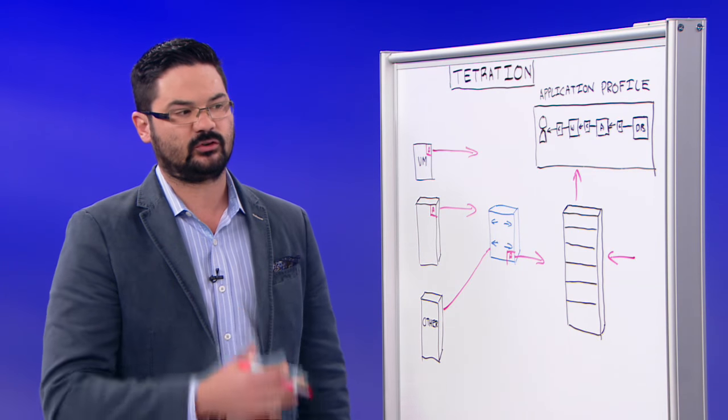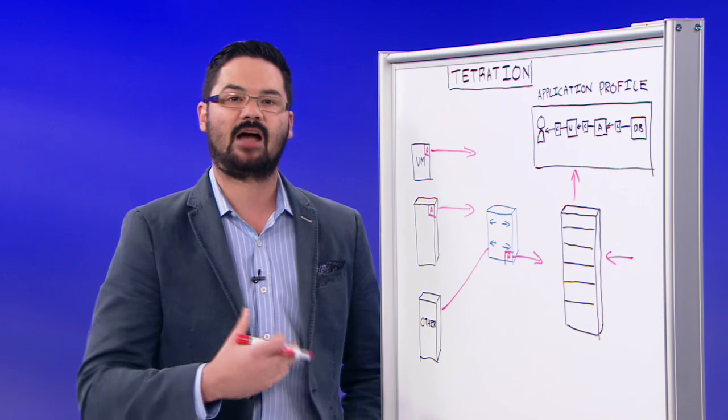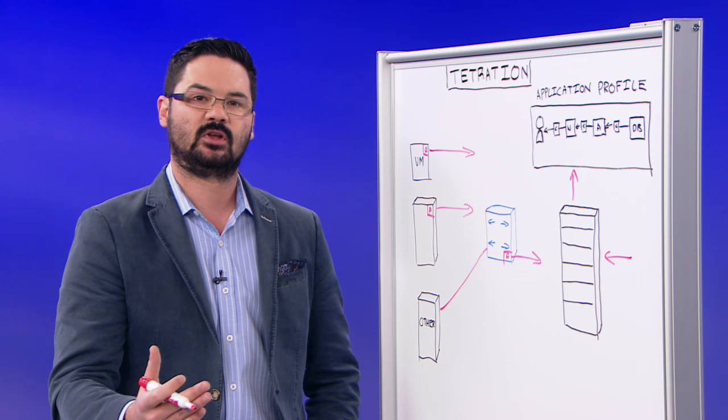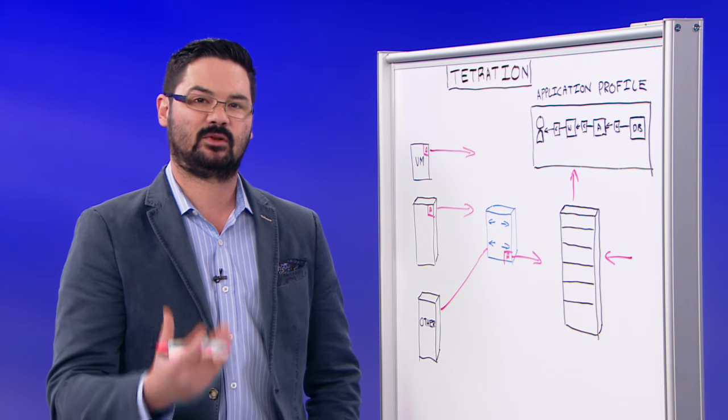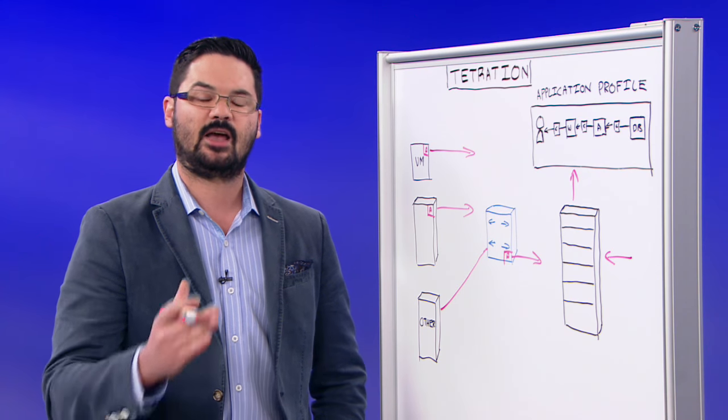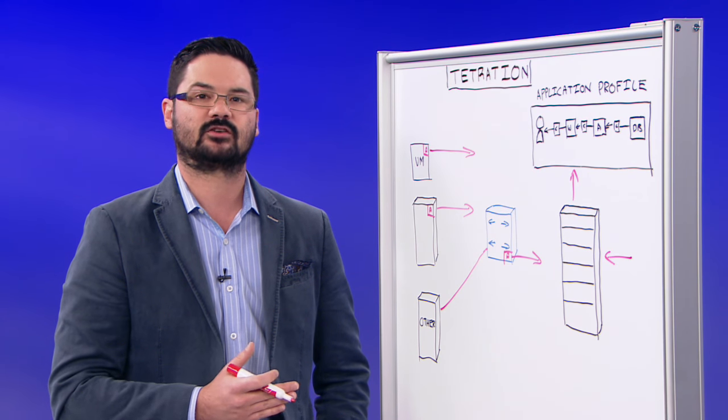The Tetration appliance also can sit resident in the data center after doing these dependency mappings for real-time analytics over time. So now I can start to see if I have anomalies in my network, if I have problems that are either administrative or malicious, and report those in a very fast and efficient fashion.